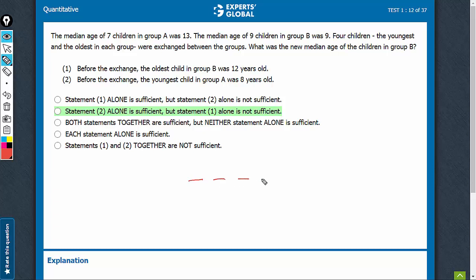Group A has 7 kids and the median age is 13. So, that's Group A.